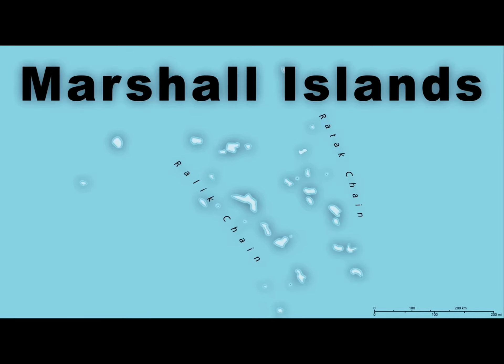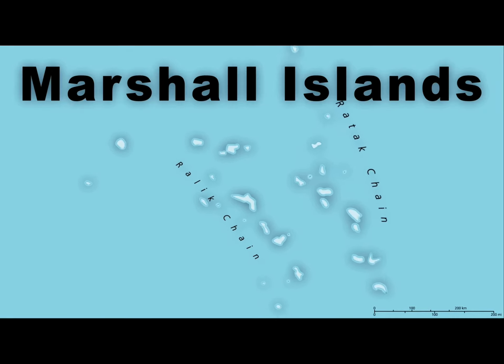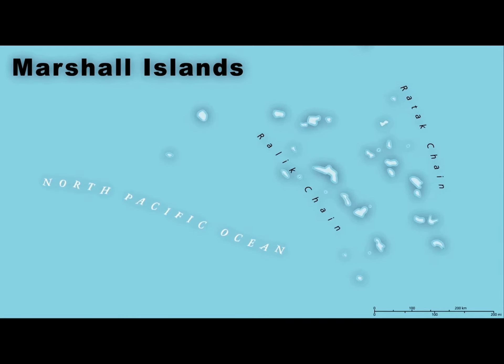The Marshall Islands are divided into two island chains, the Relic Chain and the Radek Chain. The Marshall Islands are in the Central Pacific Ocean, with the capital Majuro — let's get into this commotion.